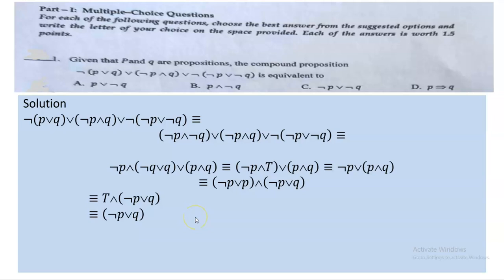As we discussed in class, negation P or Q is equivalent to P implies Q. You can prepare a truth table and verify they are the same. Since the option negation P or Q is not listed directly, but we know it equals P implies Q, the answer for this first question is D. Keep in mind: P implies Q equals negation P or Q — we'll use this concept again.